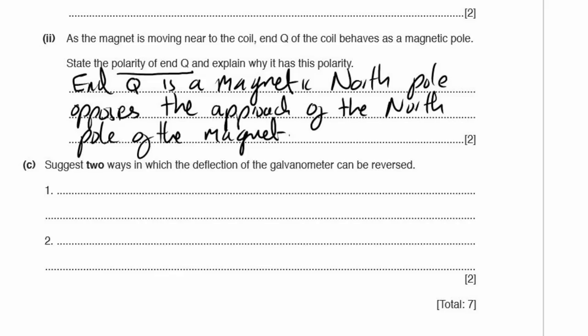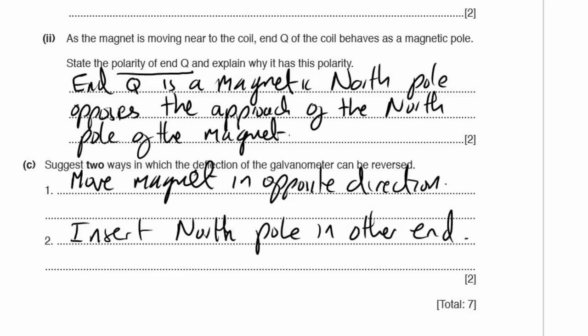Part C: suggest two ways to reverse the galvanometer deflection. First, move the magnet in the opposite direction. Second, insert the north pole into the other end of the coil. Alternatively, move the south pole in the same direction as the north pole was originally moving.